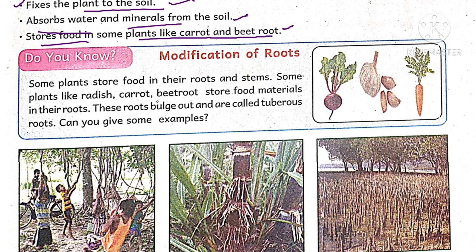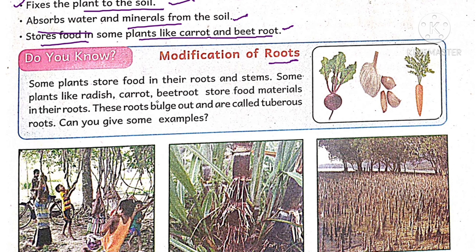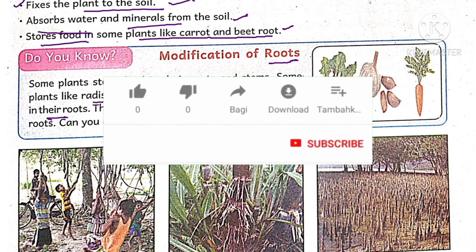Do you know about modifications of roots? The main functions of a root are to fix the plant into the soil and absorb water and minerals. Sometimes roots are modified to perform some special functions. Some plants like radish, carrot, and beetroot store food and materials in their roots. These roots bulge — meaning the size of the roots increases — and are called tubers.